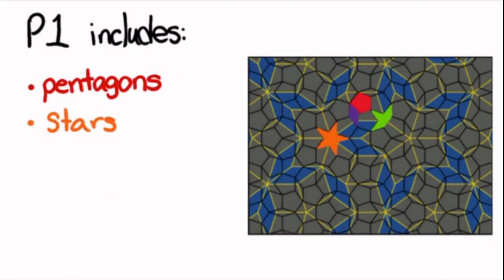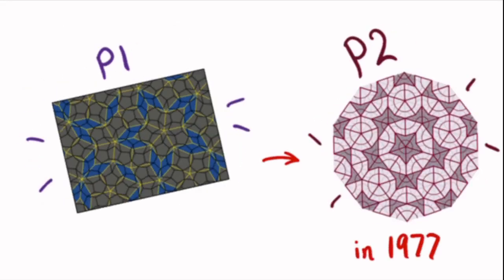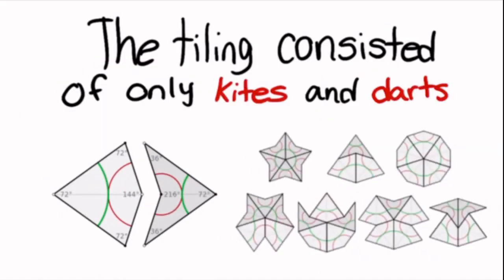P1 included pentagons, stars, boats, and diamonds. The discovery of P1 was quickly followed by P2 in 1977, where the tiling consisted of only kites and darts.